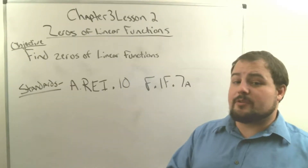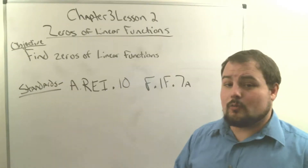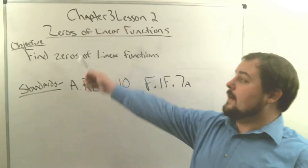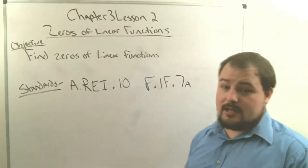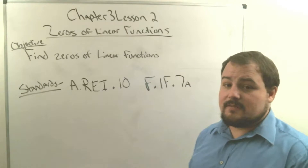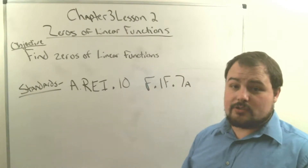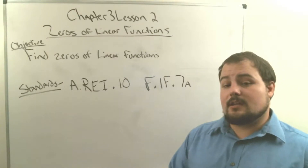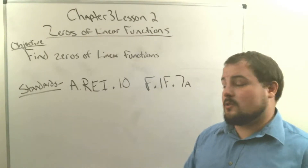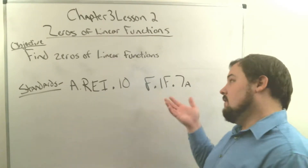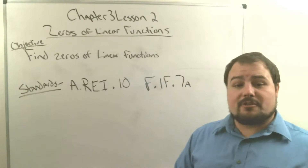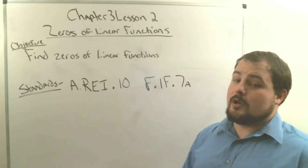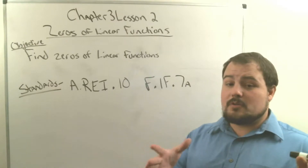Hey ninth graders, welcome to Chapter 3, Lesson 2. We're going to be talking about zeros of linear functions — finding zeros of things that make lines. Our objective is to find zeros of linear functions. Our standards are Algebra Reasoning Expressions and Inequalities Standard 10, and Functions Interpreting Functions Standard 7a.